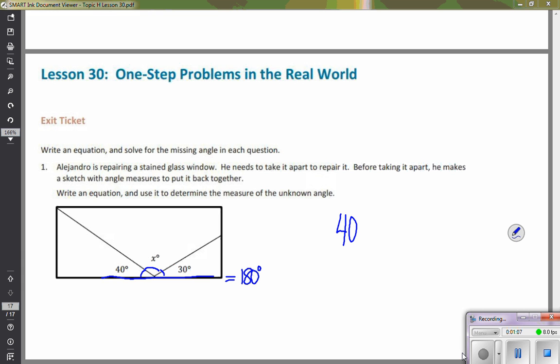I'm just going to write that in an algebraic sentence: 40 plus x plus 30 degrees equals our total of 180 degrees. Let's take the constants that we can put together as like terms, and now we have 70 plus x equals 180.